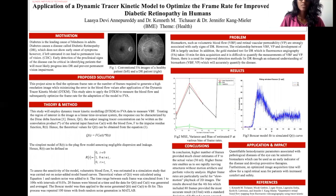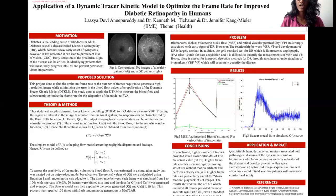So this project aims to apply the dynamic tracer kinetic model to measure the blood flow biomarker, and subsequently optimize the frame rate for the adaptation of this model to fluorescein video angiography data. We want to use the dynamic tracer kinetic model because it has been widely researched and well established in studies related to brain hemodynamics, but hasn't been popular in retinal applications because of the lack of imaging parameters that are yet to be determined or optimized. Hence, this project aims to identify the optimum frame rate required to generate a high quality image while minimizing error on the volumetric blood flow estimates.